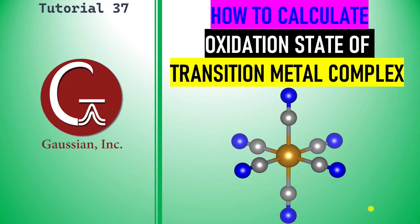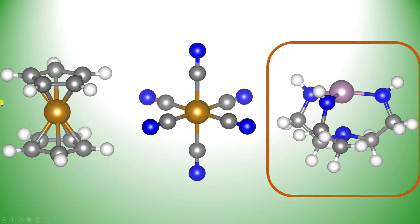This is tutorial 37. In this tutorial, I'm going to teach you how to calculate the oxidation state of transition metal complexes using Gaussian and Multiwfn software. The three metal complexes I have chosen to study are ferrocene, hexacyanoiron complex, and HIPTMO metal complex.